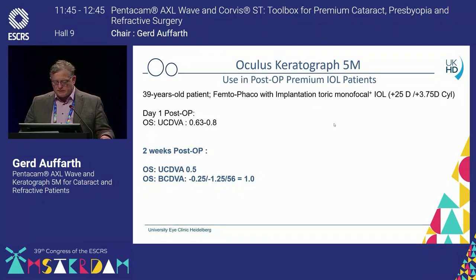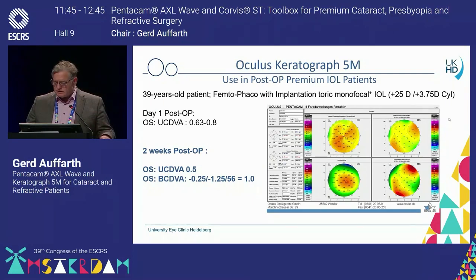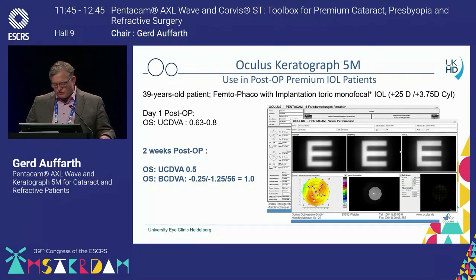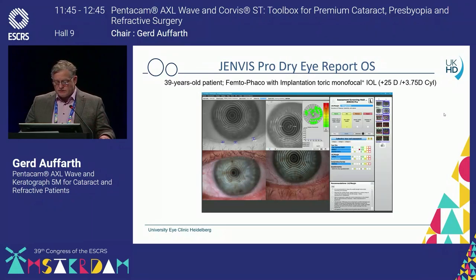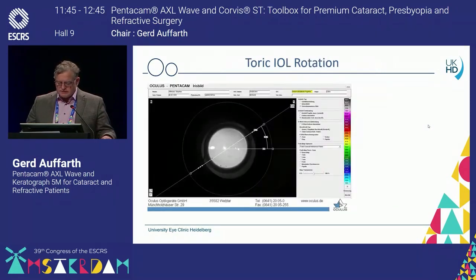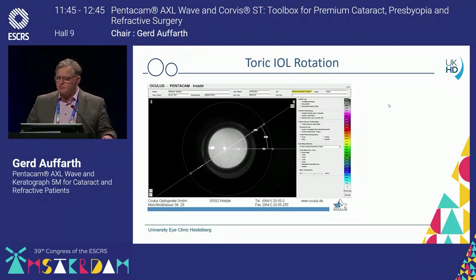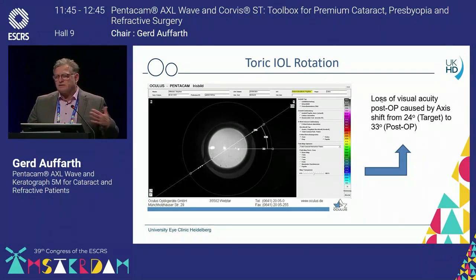The second example: somebody got a toric lens in the eye. First day, good visual outcome. Then two weeks later, only uncorrected 0.5 with some residual astigmatism. If you look at the visual performance, it doesn't look too bad. So you may think about a tear problem, but if you use the dry eye report, you see the tear film is quite okay — just borderline. The real reason is decentration and rotation of the lens. You should not wait and give eye drops for four weeks — just correct the 10 degrees of rotation to satisfy this patient.